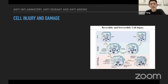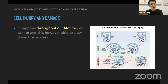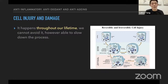Cell injury and damage happen every day in very large quantities — throughout our entire lifetime. We cannot avoid it; however, we are able to slow down the process and control it at the optimal pace. The optimal pace is the actual pace we're supposed to age. If we're not keeping it at the optimal pace — if we neglect it and don't care about it — it will actually become faster.